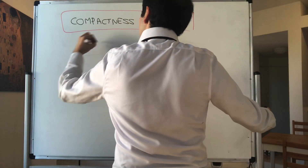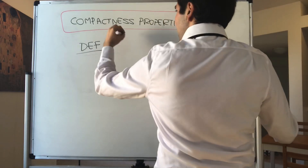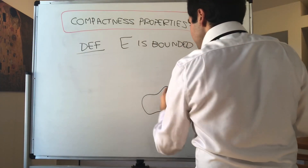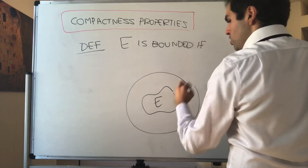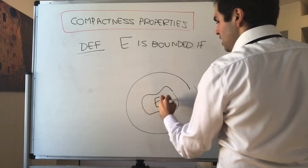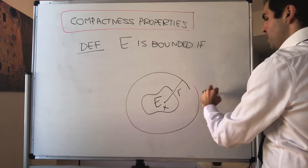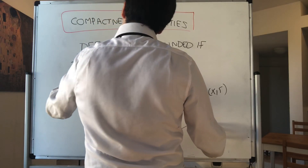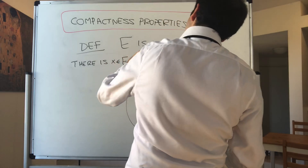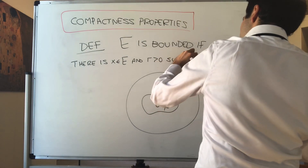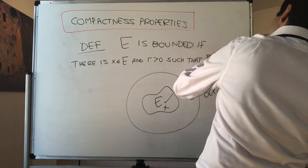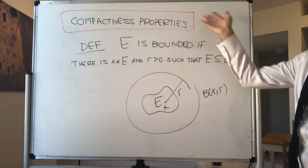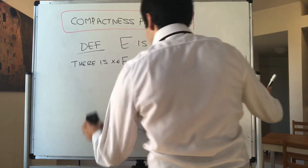First of all, let me define what it means for a set to be bounded. Definition: E is bounded in a metric space if simply your set E is contained in a ball. In other words, there is some X in E and some positive radius R such that E is contained in the ball centered at X with radius R. So bounded sets are included in balls, and now let's prove that a compact set must be bounded.